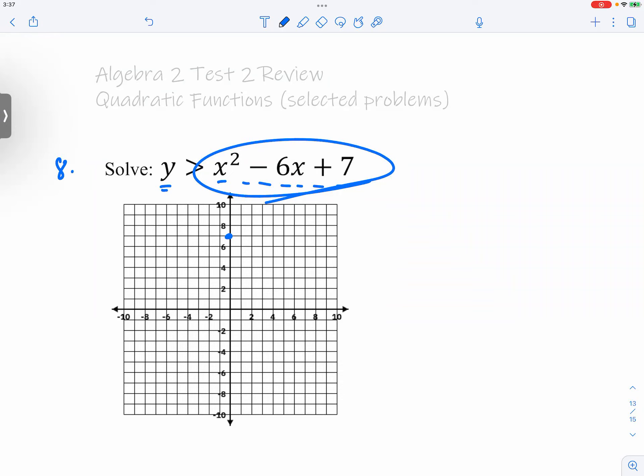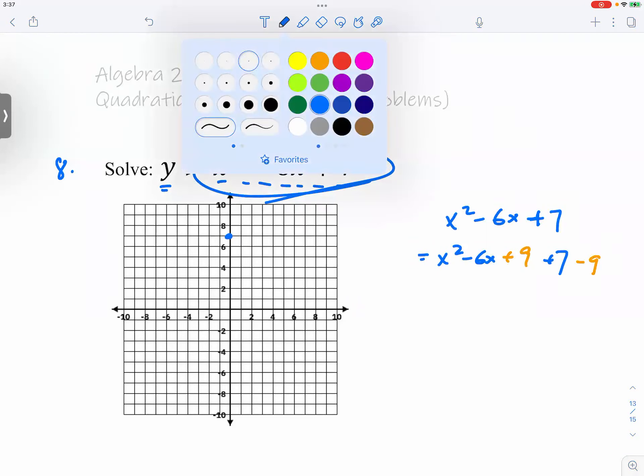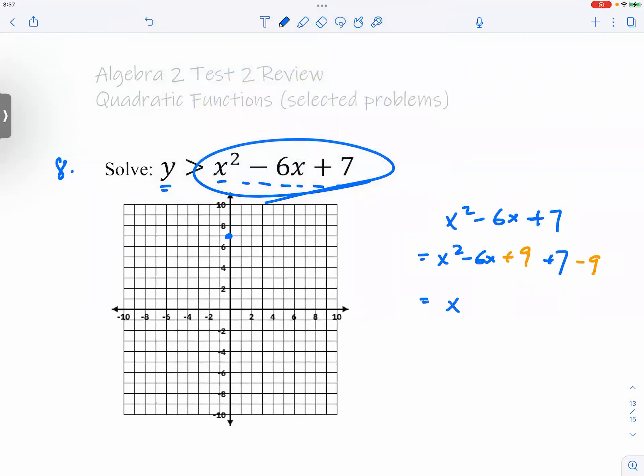So what can we do? Well, if that's the case, you probably want to do completing the square. Why? Because by completing the square you can actually get the vertex form. Once you get the vertex form...